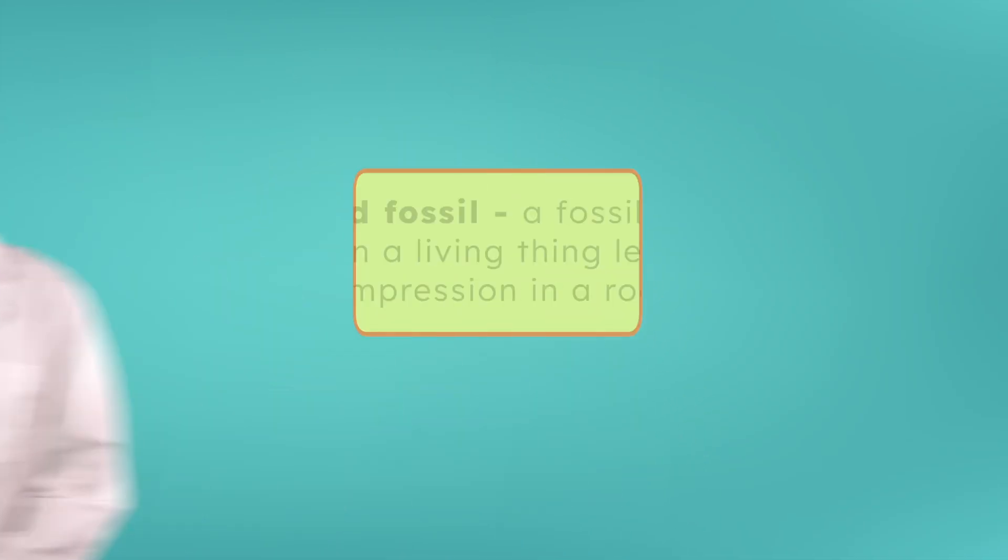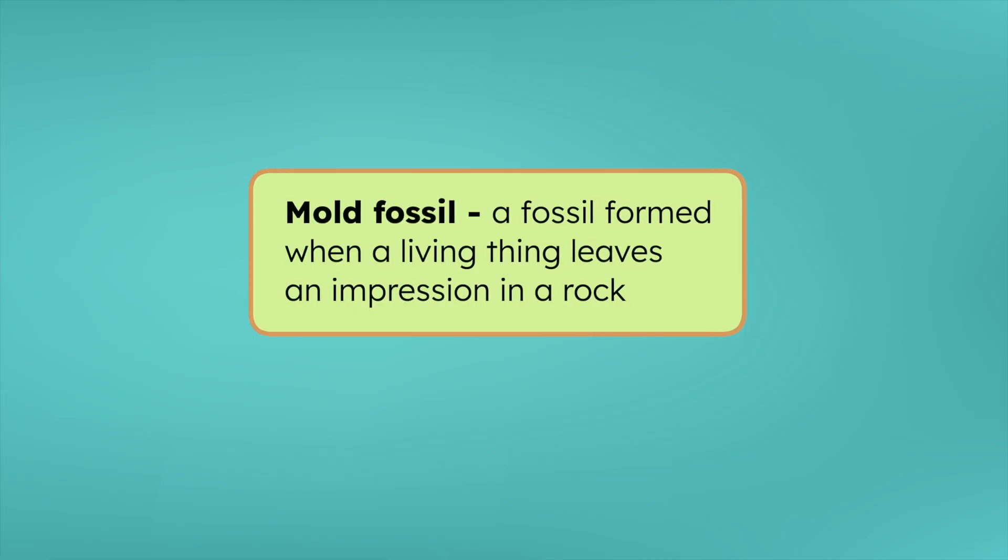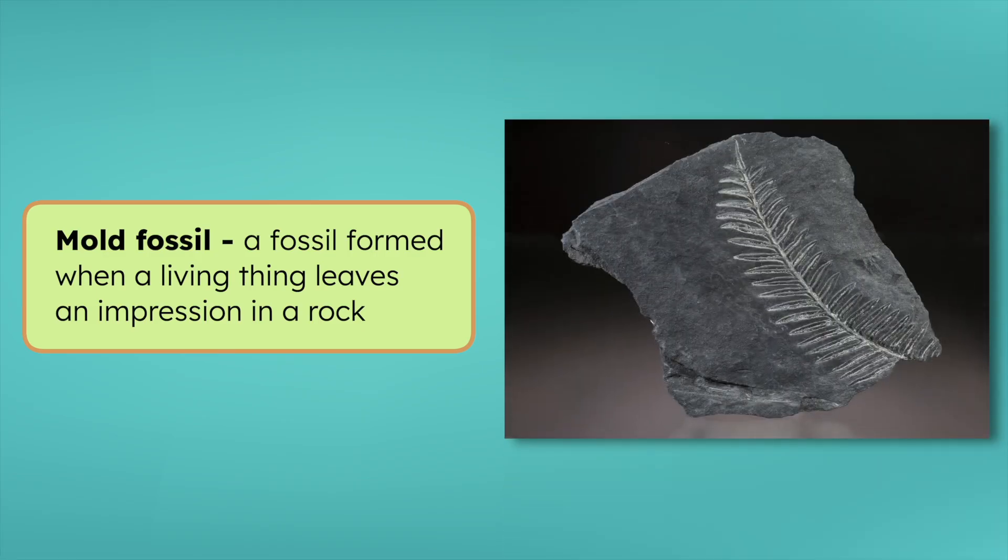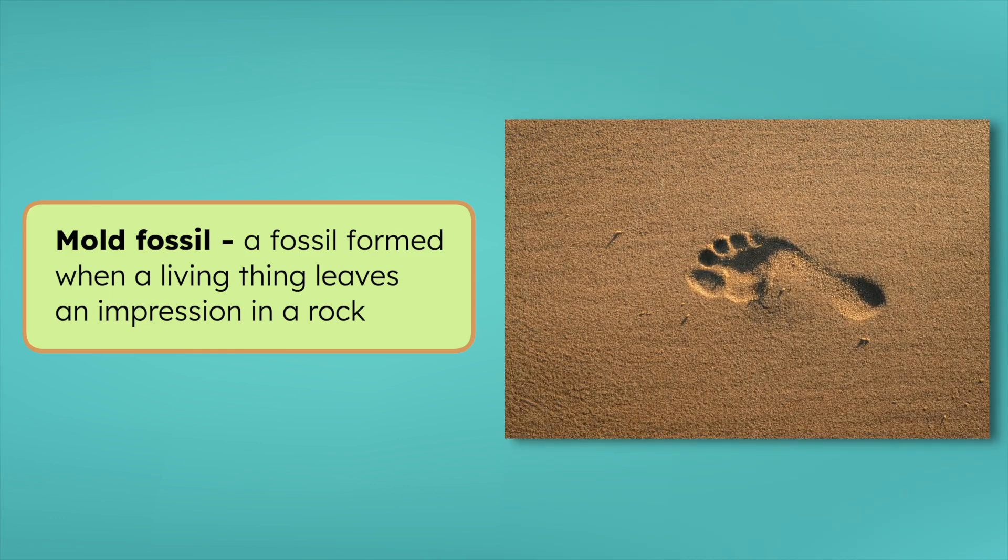But not all fossils come from bones or teeth. Sometimes a fossil forms when just the shape of a living thing is left behind. These are called mold and cast fossils. A mold fossil forms when a plant or animal is buried in sediment, but instead of the hard parts turning into stone, they break down and disappear over time. This leaves an impression, or an empty space, in the shape of the living thing, kind of like a footprint in wet sand.